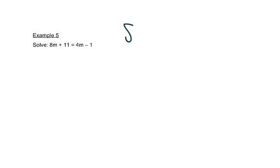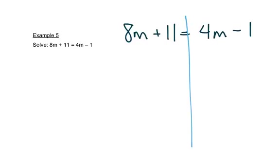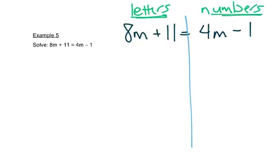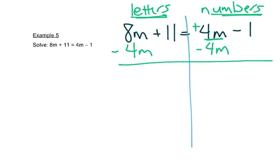Now in this problem we have letters on both sides of our equation — this is the first time we've had this. We're still going to draw our line down through here. This doesn't really change anything; we just need to move the letters to one side first. Let's put anything with a letter on the left side and things without letters on the right side. The right side has a letter — it's really a plus 4m — so we'll subtract 4m and write minus 4m on both sides. I'm going to put it underneath the other m. That will cancel this out.